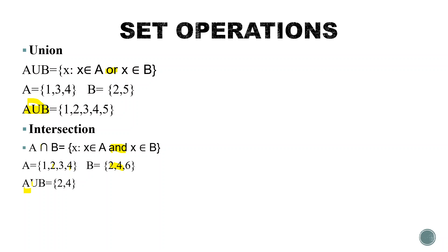Sorry, there was a mistake. The result {2, 4} is A intersection B, not A union B. A intersection B equals {2, 4}.